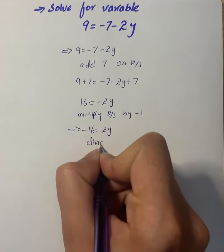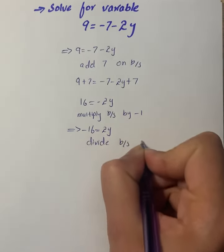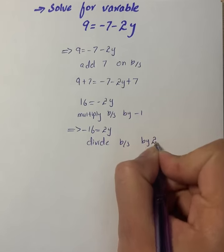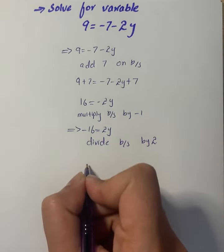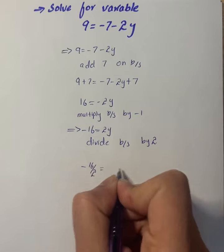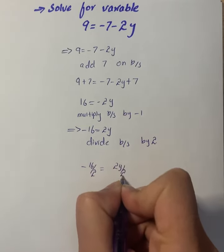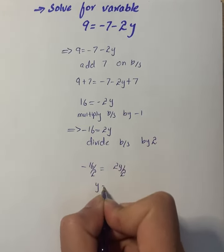Right now we will divide both sides by 2. It will give us minus 16 by 2 equals 2y by 2.